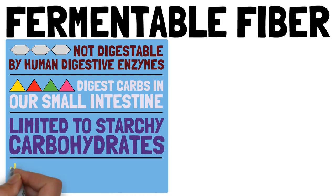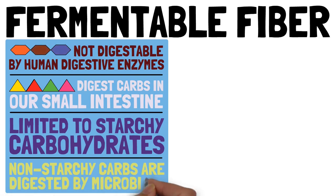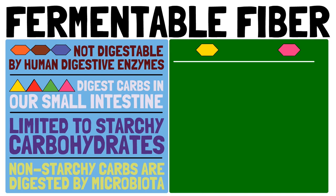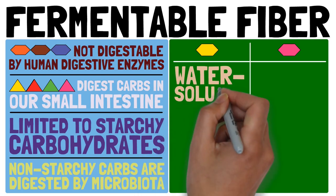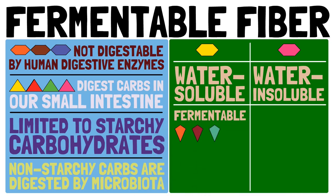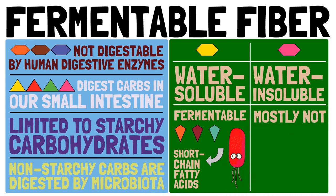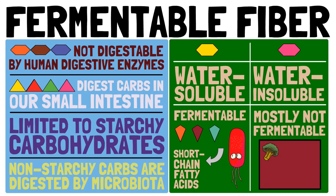We leave the digestion of other non-starchy carbohydrates — the digestion of some dietary fibers — to our gut microbiota. Dietary fibers are commonly separated into water-soluble and water-insoluble fiber. Most water-soluble fiber is fermentable, meaning the enzymes provided by our gut bacteria are able to break it down, producing short-chain fatty acids. Most water-insoluble fiber is not fermentable. Most plant foods contain a good mix of both.